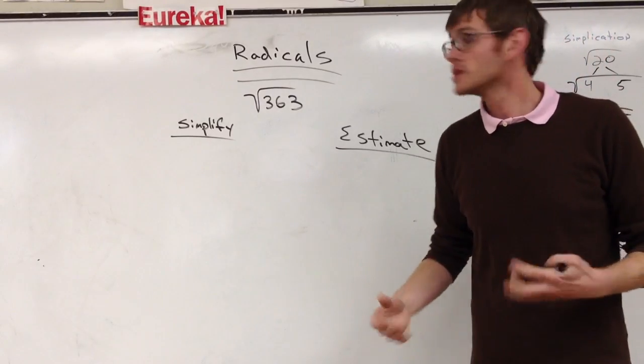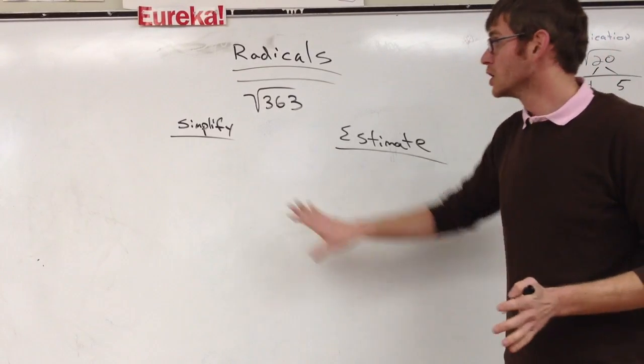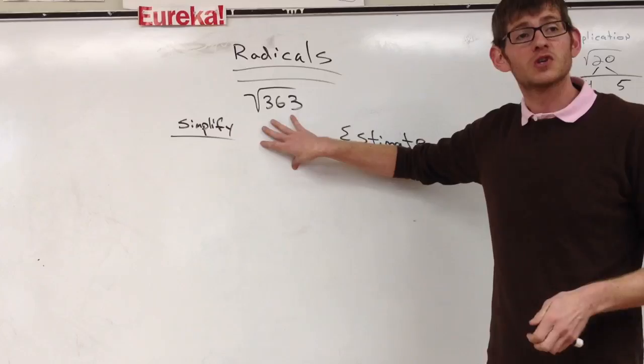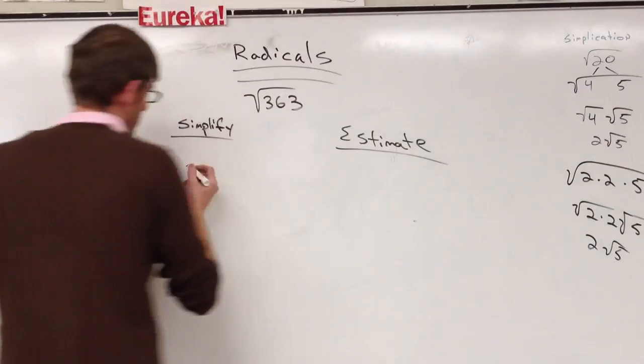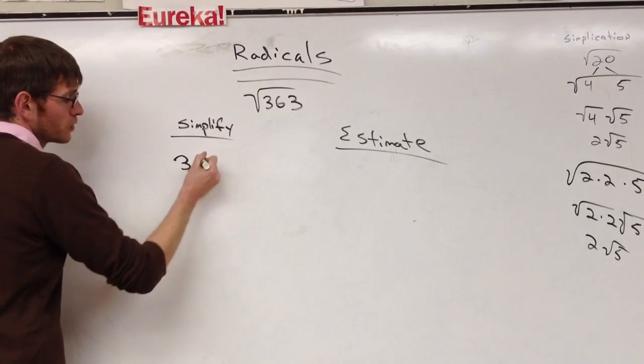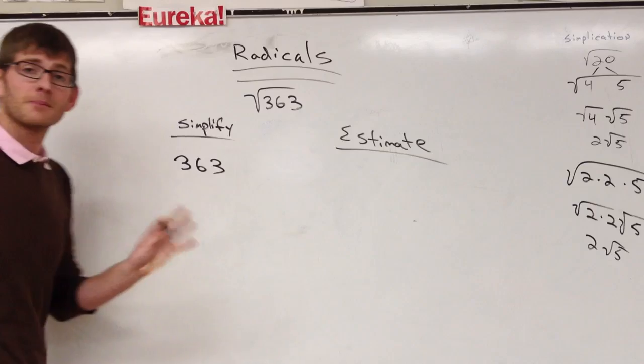With estimates, you're going to have decimals. So first we're going to simplify the square root of 363. To simplify the square root of 363, I'd like to build a factor tree. So with this factor tree, what are two numbers that would make sense to set up as factors of 363?